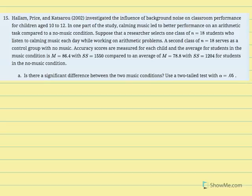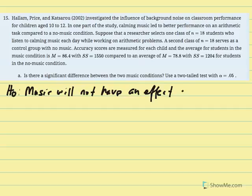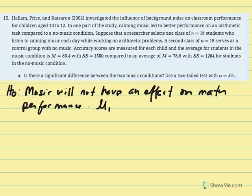I'll model this from beginning to end, starting with the null and research hypotheses. The null says that music will not have an effect on math performance, meaning population 1 equals population 2 — those who listen to music perform the same as those who do not. Another way to write this: population 1 minus population 2 equals zero, denoting they are equivalent.